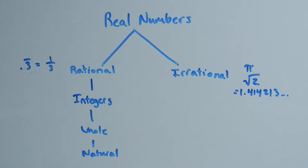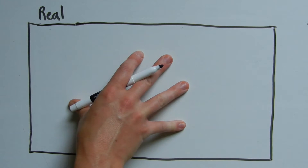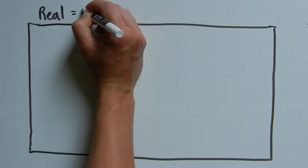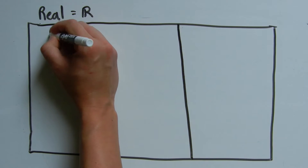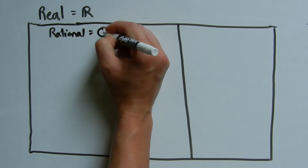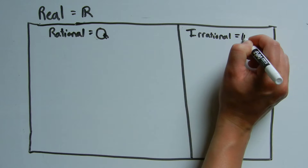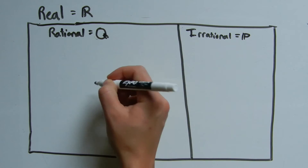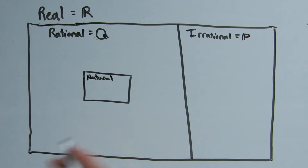Let's look at this as a picture to make it easier to understand. Think of real numbers contained inside a box — this outer box represents all the real numbers. The symbol for real numbers is R. Now, real numbers break down into two separate groups: rational numbers, represented with a Q, and irrational numbers, represented with a P. Within the rational numbers we have a further breakdown of other numbers.